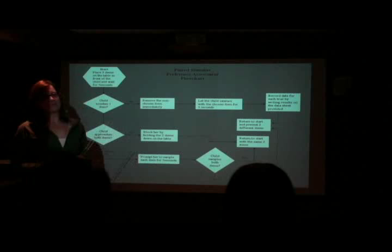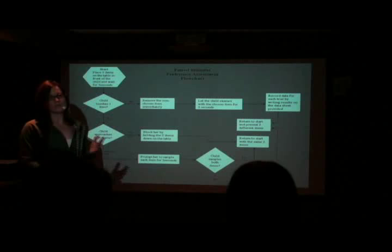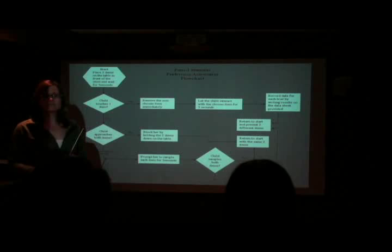If the child touches one item and then you remove the non-chosen item immediately, why do you do that? That's a really good question. The reason you want to do that is because they've gone for one item, they clearly prefer that one, and you want to remove the other one immediately simply to not interfere with what they're looking at. This way they're not distracted by the other item sitting on the table — you've moved it off and it gives them a chance to interact for five seconds with the chosen item.